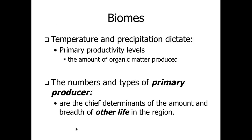Biomes are temperature and precipitation determined. Primary productivity levels are going to depend on how much organic matter there is, and what this really comes down to is what and how many primary producers are there. Primary producers are always a plant or perhaps a protist — something that can perform photosynthesis. The type, abundance, and diversity of organisms performing photosynthesis will determine everything else about that biome. A lush, thriving primary producer population leads to a thriving biome, and if it's very restricted you'll have a much less inhabited biome.